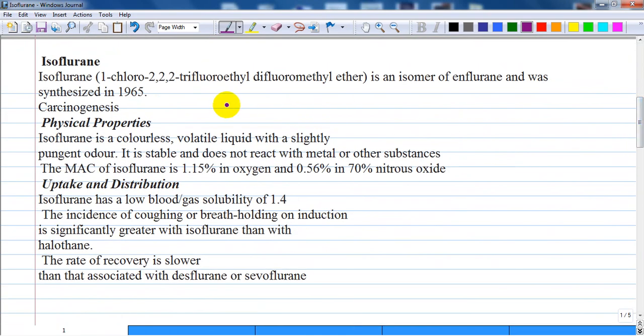So isoflurane is 1-chloro-2,2,2-trifluoroethyl-difluoromethyl-ether. It is an isomer of enflurane and was synthesized in 1965. Isomer means that they are chemically the same structure and the arrangement of the derivatives are on the right or on the left side.